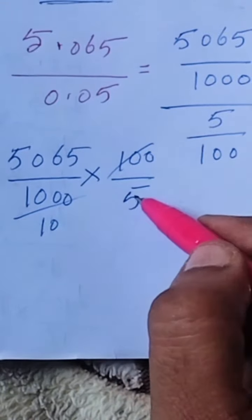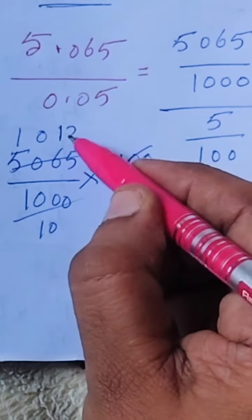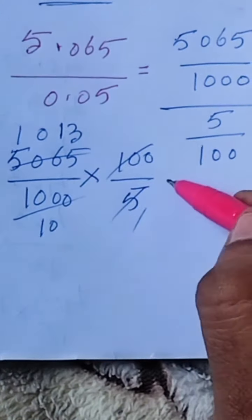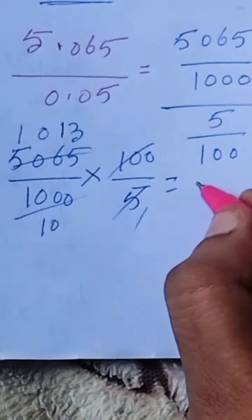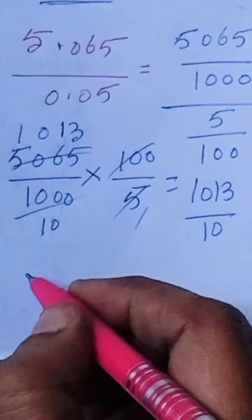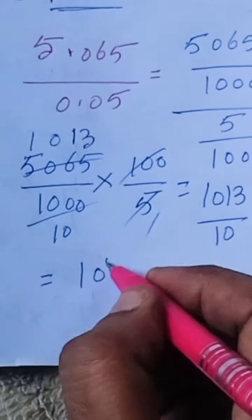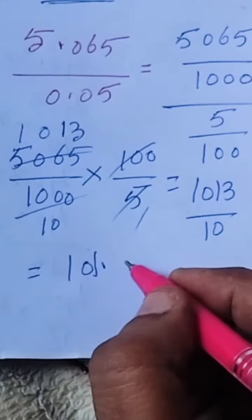Here it is 5 ones, so answer equal to 1,013 by 10. So how we write this? 101.3.